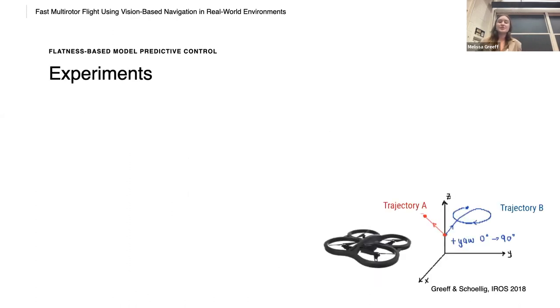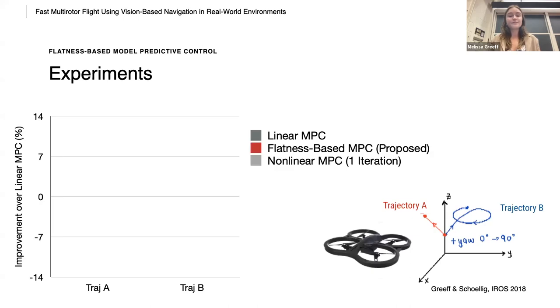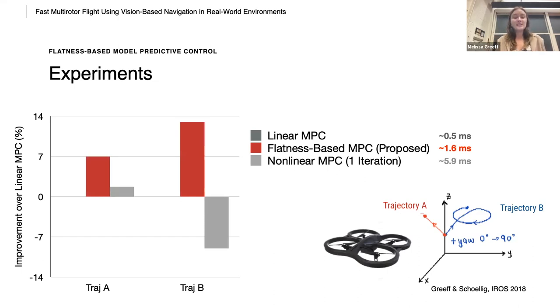So we compare these approaches on two simple trajectories, a step in the XZ and a circled trajectory. Linear MPC solves a convex optimization problem and takes around 0.5 milliseconds to compute. Flatness-based MPC takes around 1.6 milliseconds to compute and also solves the convex optimization problem. One iteration of nonlinear MPC takes around 5.9 milliseconds to compute. What we see is that for the extra one millisecond required for flatness-based MPC, this can result in improved performance over linear MPC by still accounting for the nonlinearities without being susceptible to local minima.